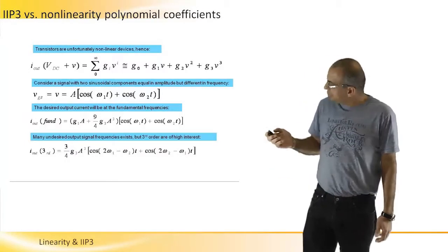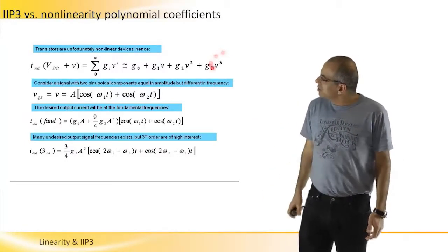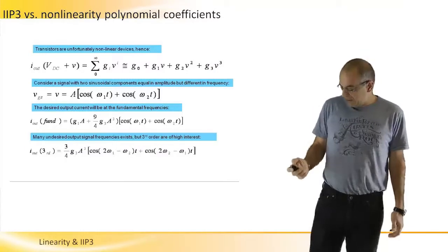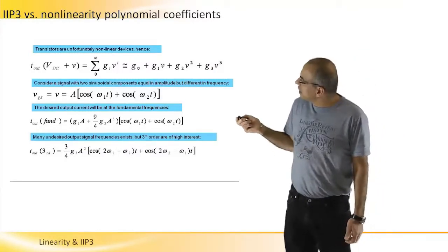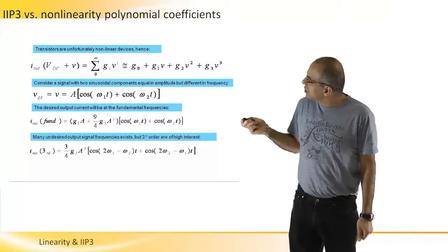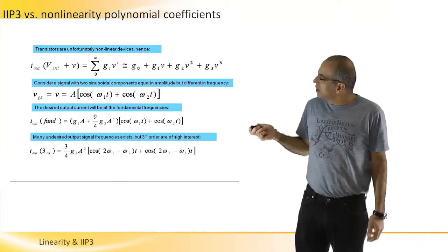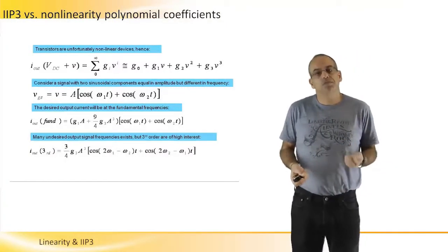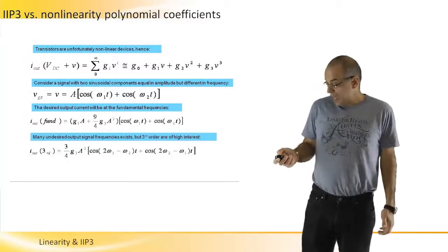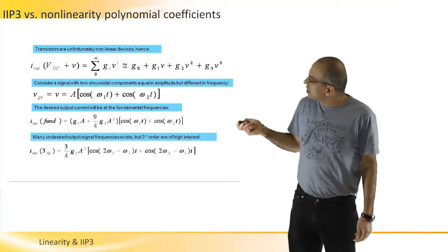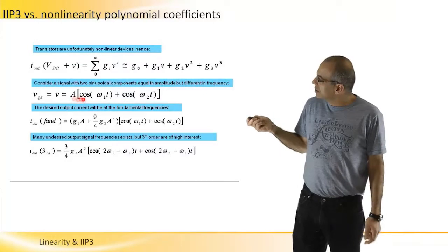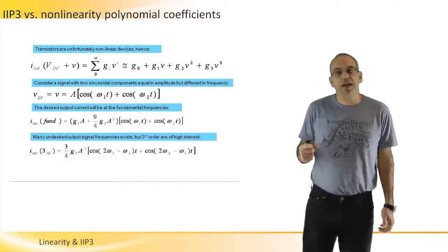And look at the first four components of this polynomial. And we'll just take it to the third order. So if we do that, and we understand that V in this polynomial is actually VGS, the input voltage to the transistor.